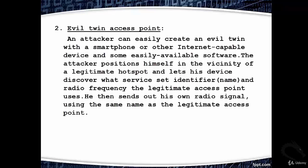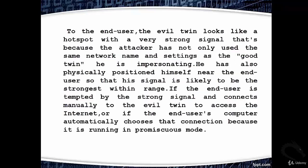Second: Evil Twin Access Point. An attacker can easily create an evil twin with a smartphone or other internet-capable device and some easily available software. The attacker positions himself near a legitimate hotspot and discovers the SSID and radio frequency the legitimate access point uses. He then broadcasts his own radio signal using the same name, and positions himself near the end user so his signal is likely to be the strongest.